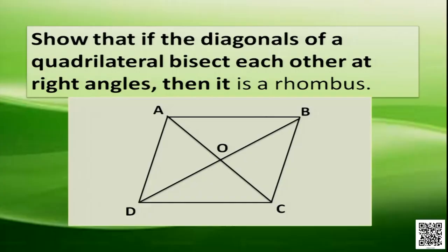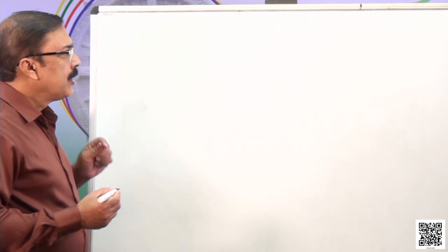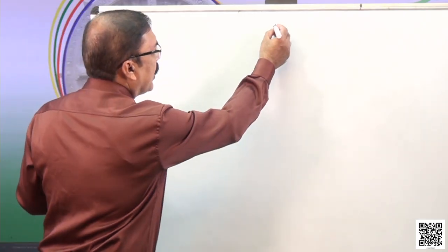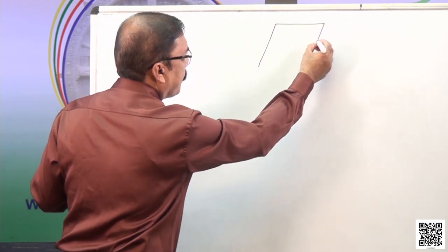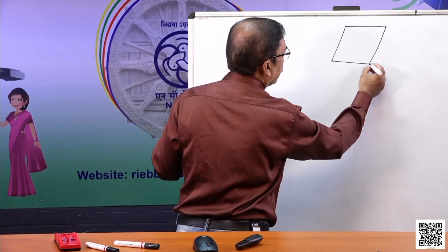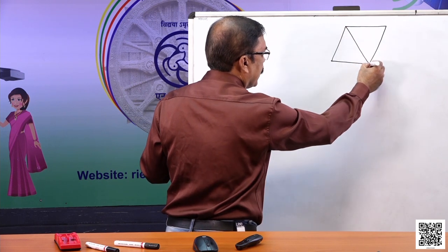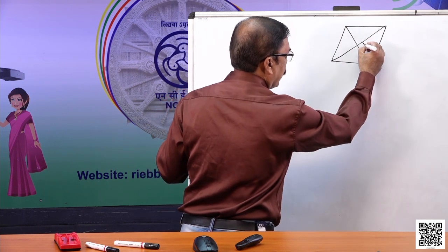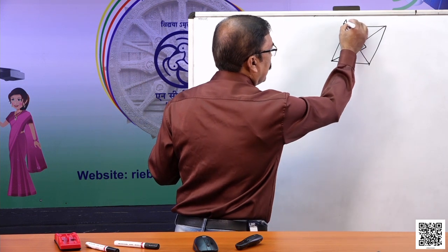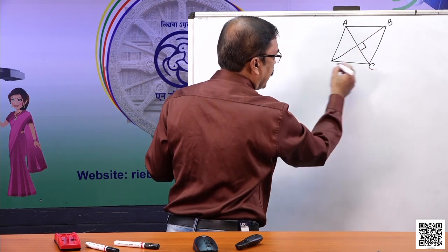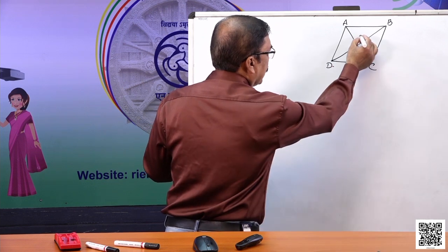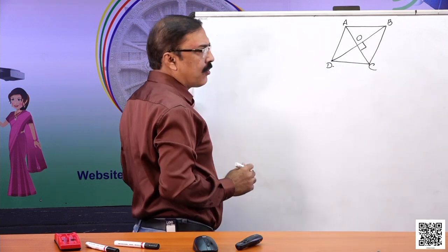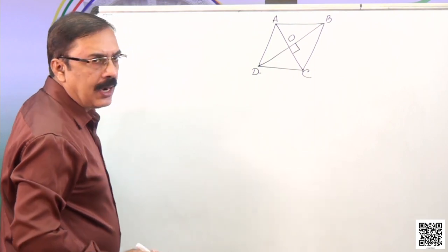Now let us show that if the diagonals of a quadrilateral bisect each other at right angles, then it is a rhombus. Given that quadrilateral ABCD has diagonals that bisect each other perpendicularly at O.